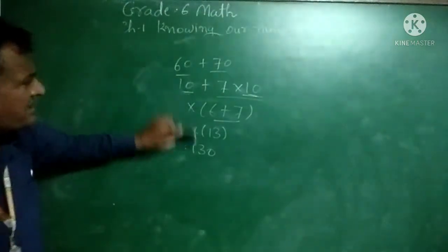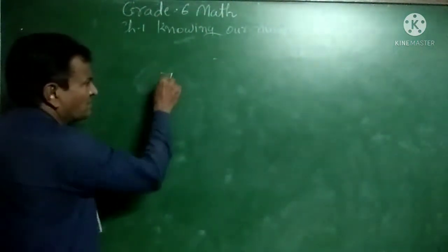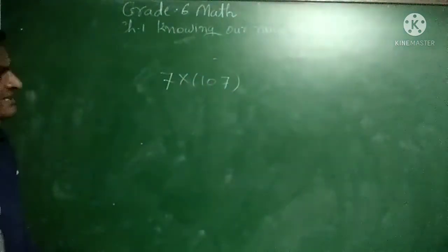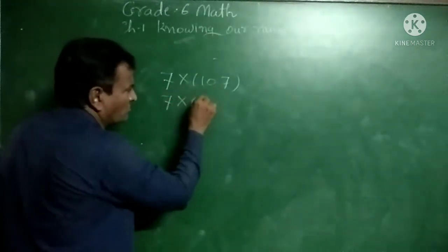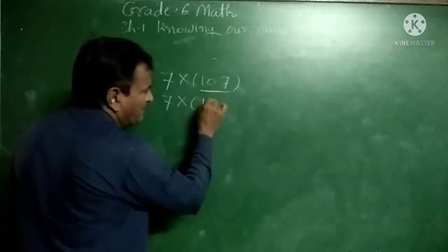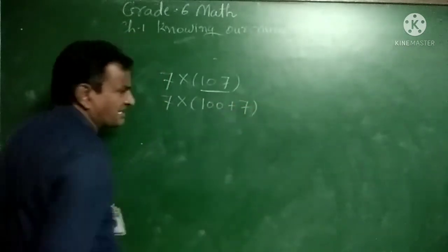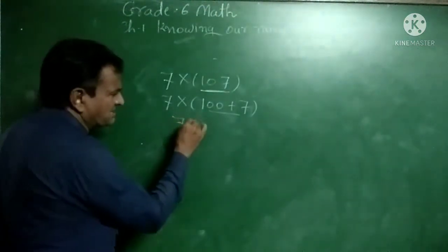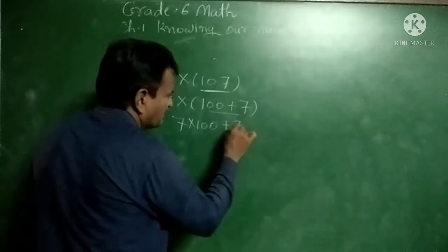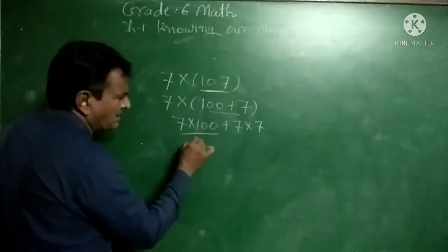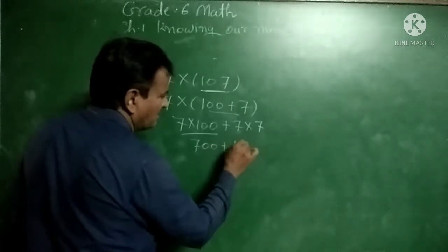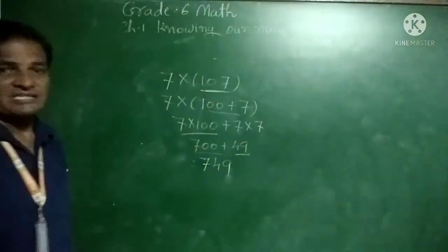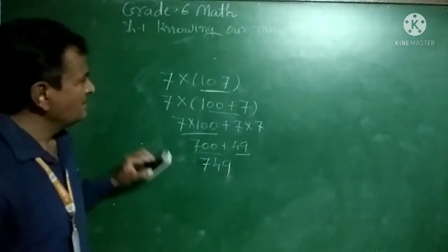Suppose we write down 7 into 107. Here we write 107 as 100 plus 7. So 7 into (100 plus 7) gives us 7 into 100 plus 7 into 7, which is 700 plus 49, giving us 749. So 749 is our answer.